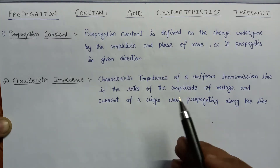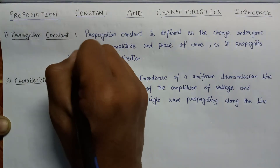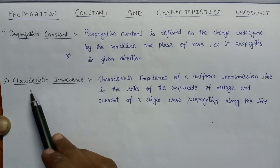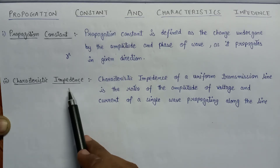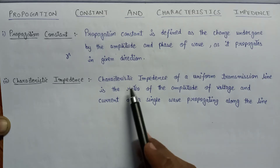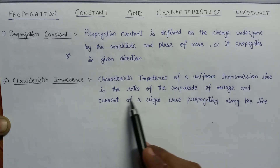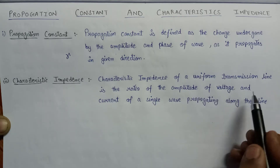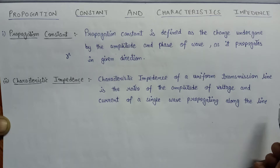A propagation constant is denoted by the symbol gamma. Now, the characteristic impedance of a uniform transmission line is the ratio of the amplitude of voltage and current of a single wave propagating in the given direction along the line.